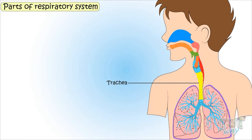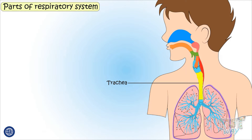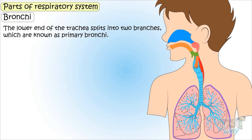Trachea: The trachea is shaped like a tube and is approximately 5 inches in length. It is also referred to as the windpipe, and it connects the larynx to the bronchi. Air also gets filtered here before entering the lungs. The inner lining produces mucus, which traps harmful particles from the air we breathe in. The lower end of the trachea splits into two branches known as primary bronchi.